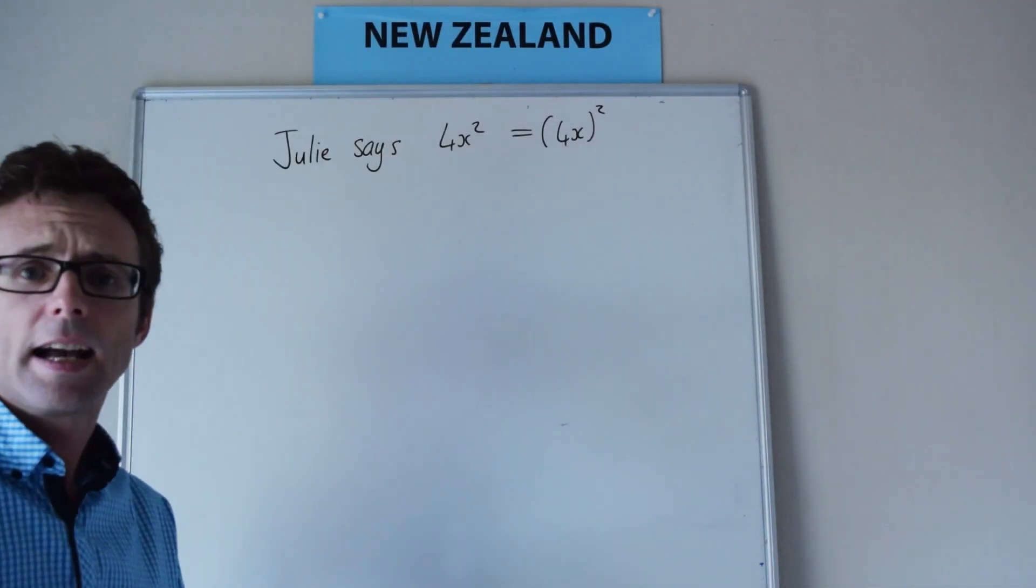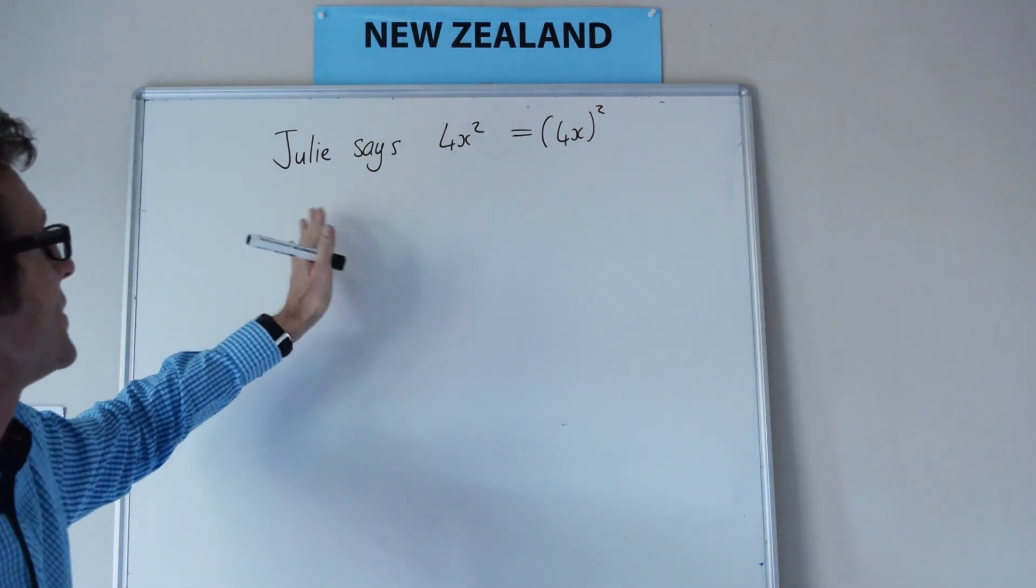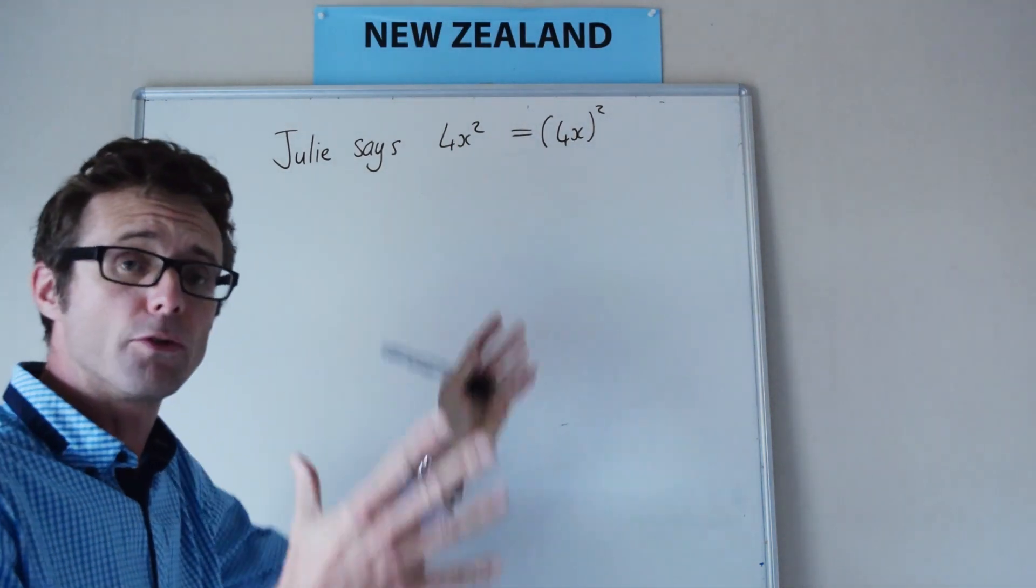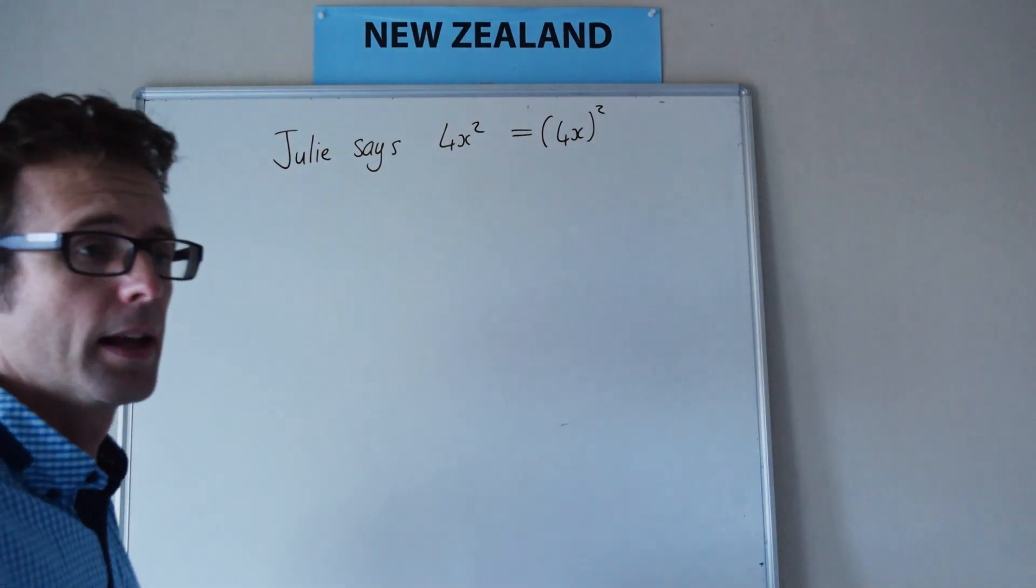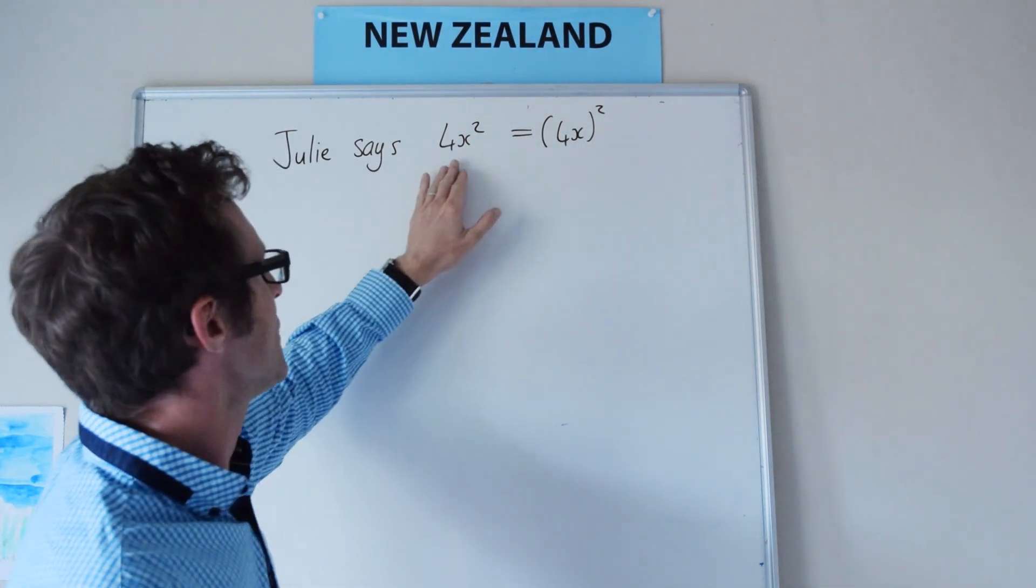So in our second question that we're going to look at, this is question 4 in your textbook, we've got this girl Julie. She says that 4x squared is equal to bracket 4x all squared. Is she right? Well, no she's wrong, and I'm sure you already know this, but let's just assume that x is equal to, say, 2.